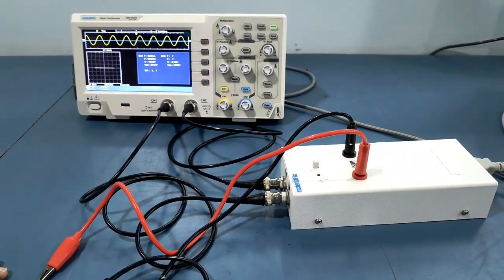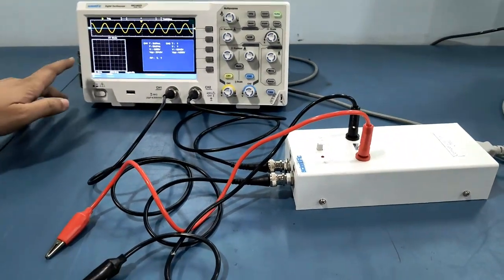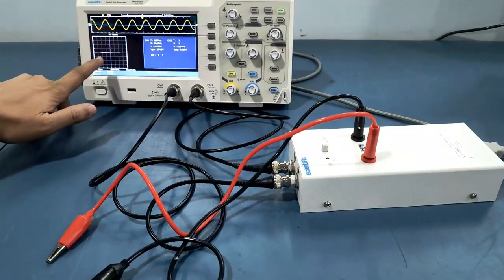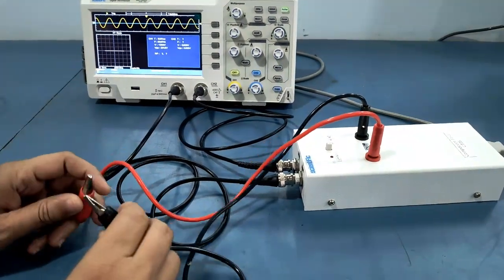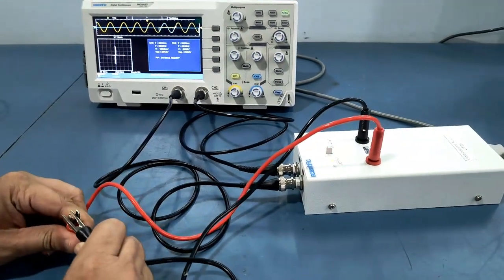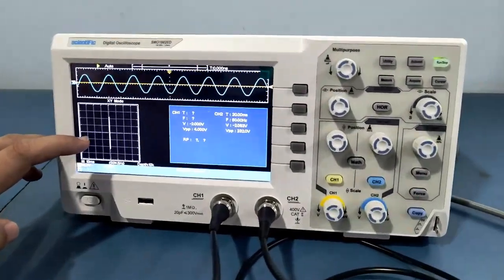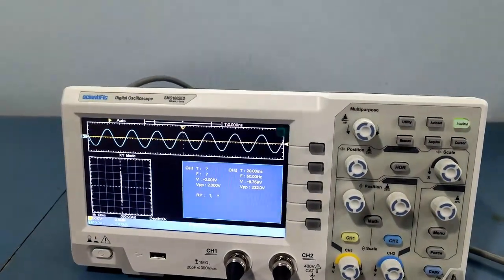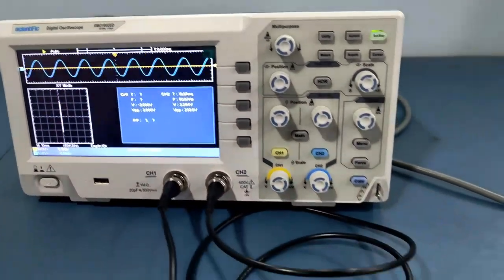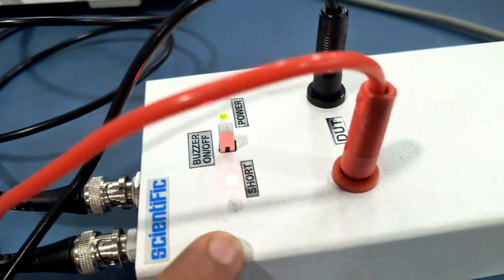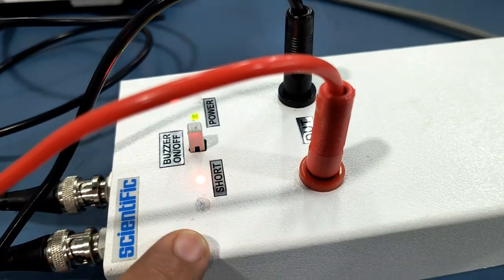We can also test open and short circuits. For an open circuit, you get a horizontal line on the XY mode. For a short circuit, you get a vertical line on the XY mode, plus a buzzer and short circuit indication on the component tester.